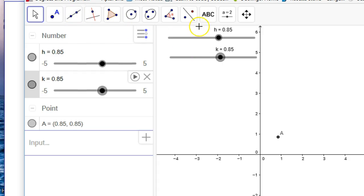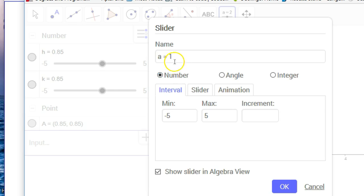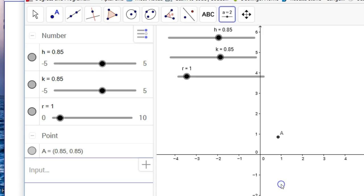Then we're going to put in one more slider for the radius of the circle. And we're going to go ahead and call that r. And the minimum, though, since it's a radius, it's always going to be positive. We could maybe make it go from 0 to 10. And there you have it. So we have h, k, and r.